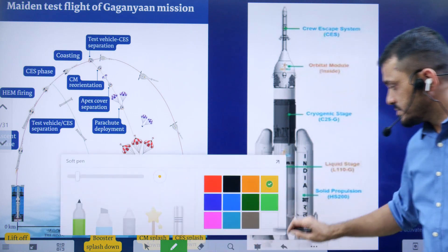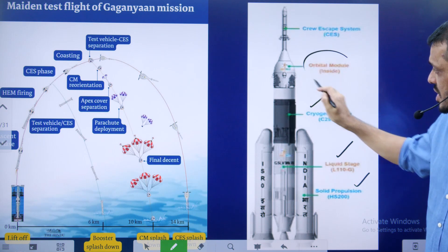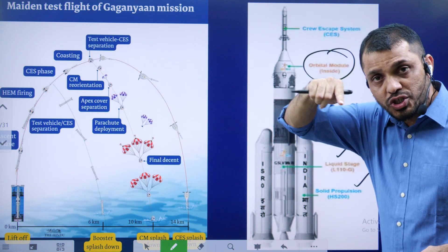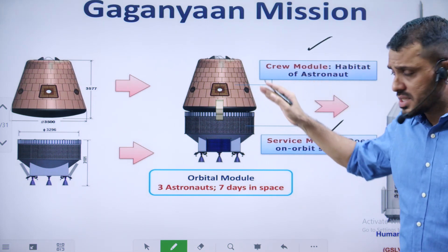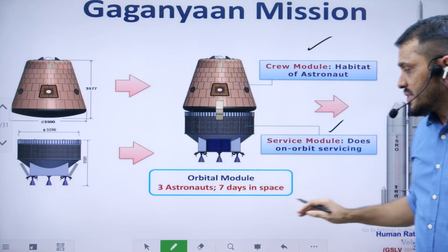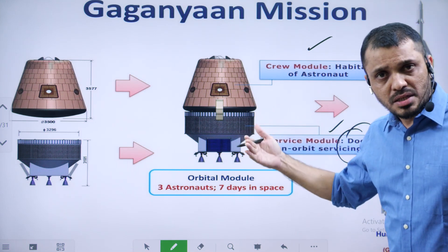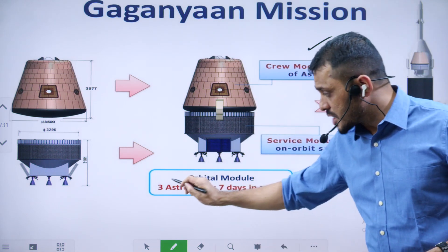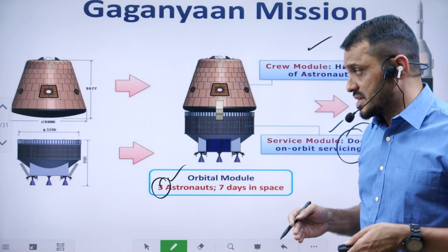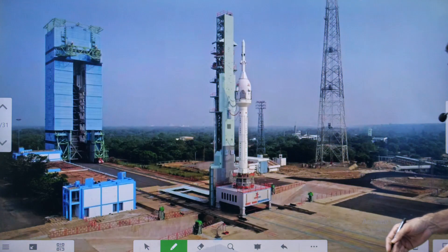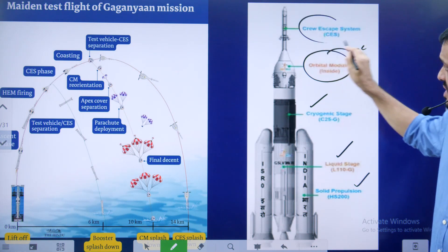The launching vehicle contains solid fuel, liquid fuel, and cryogenic fuel. On top of this is the orbital module - the one which orbits around the Earth. The orbital module again consists of two more modules: the crew module and the service module. The crew module is where astronauts will be - it provides suitable conditions to astronauts. The service module does the service required by the crew module and provides the necessary supply for the entire operation. They are planning to spend 3 days in space, but let's see if that will be extended.